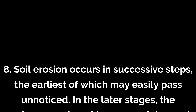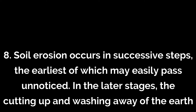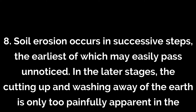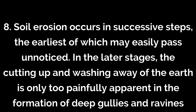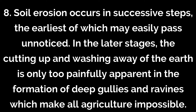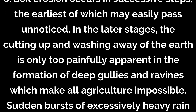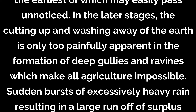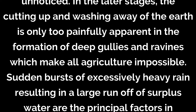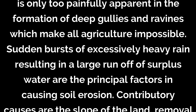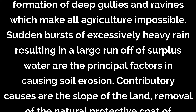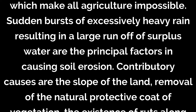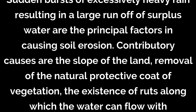Soil erosion occurs in successive steps, the earliest of which may easily pass unnoticed. In the later stages, the cutting up and washing away of the earth is only too painfully apparent in the formation of deep gullies and ravines which make all agriculture impossible. Sudden bursts of excessively heavy rain resulting in a large runoff of surplus water are the principal factors in causing soil erosion.